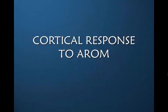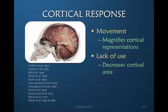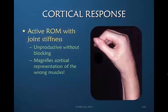Let's now look at the cortical response to active range of motion and compare it to what we learned about passive range of motion response. We all know that active movement magnifies the cortical representations in the motor cortex, and a lack of use decreases these cortical representations. As mentioned previously, active range of motion in patients who have established joint stiffness is unproductive unless joints are blocked to transfer power to the stiffer joints. In this maladaptive pattern, the patient repeats the maladaptive pattern, which magnifies the cortical representation of the wrong muscles.